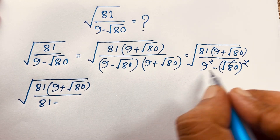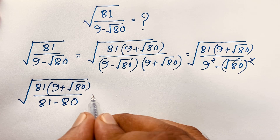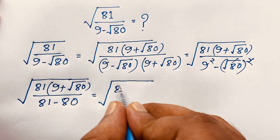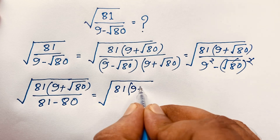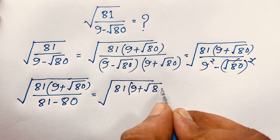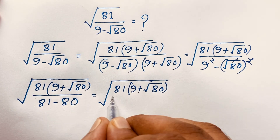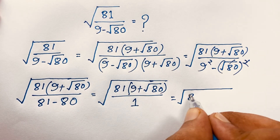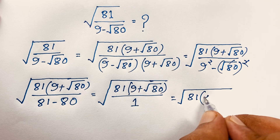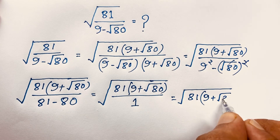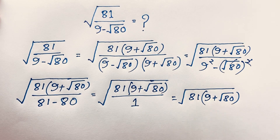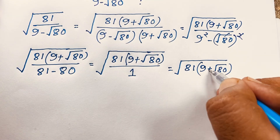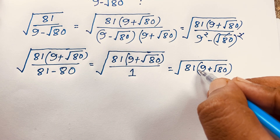The squared and square root cancel out, giving us 80. So 81 minus 80 equals 1. The expression simplifies to square root of 81 times (9 plus square root 80), all over 1. That means we have square root of 81 times (9 plus square root 80).